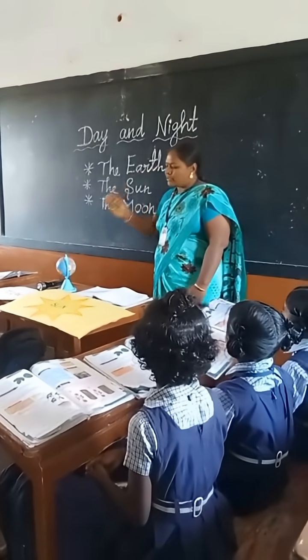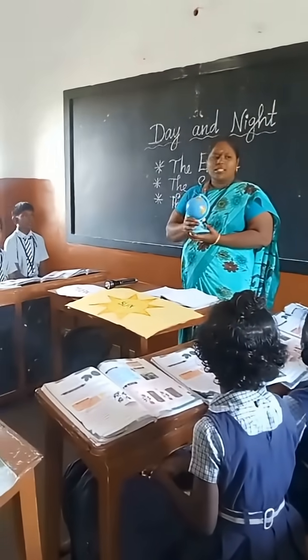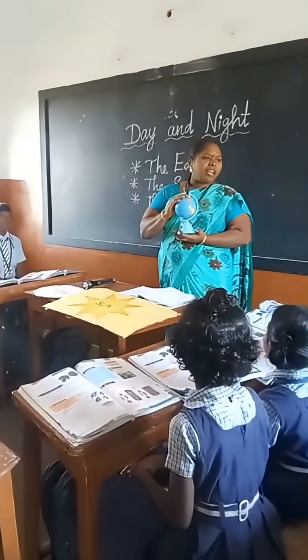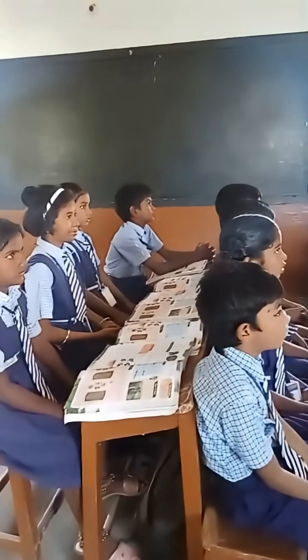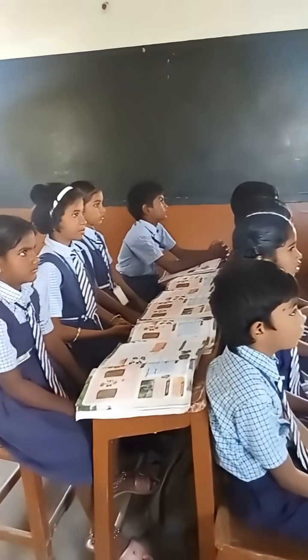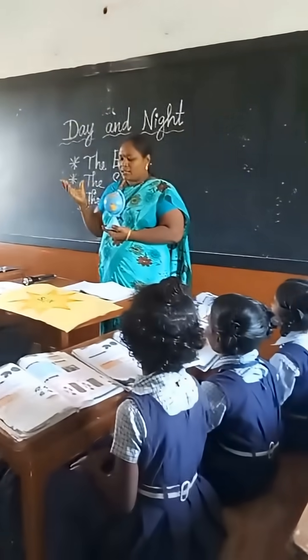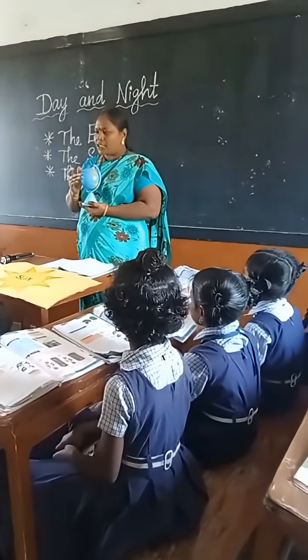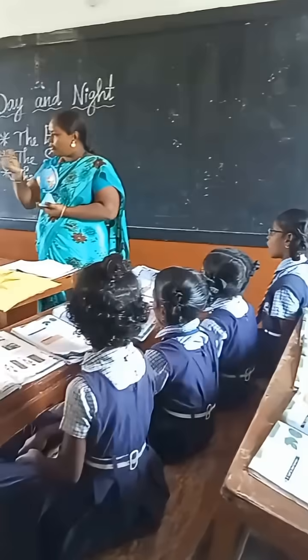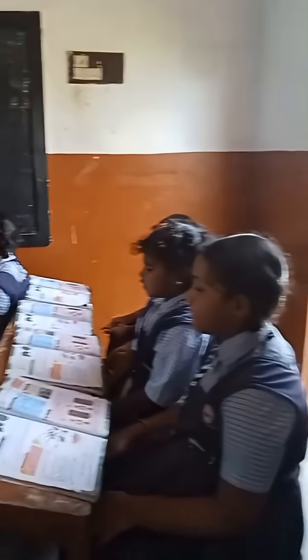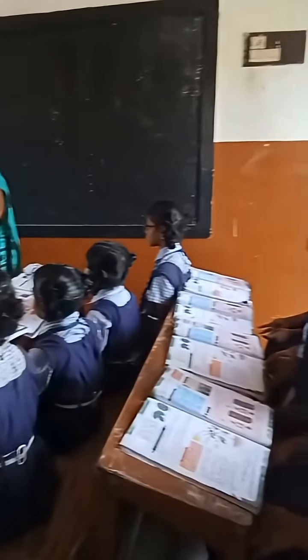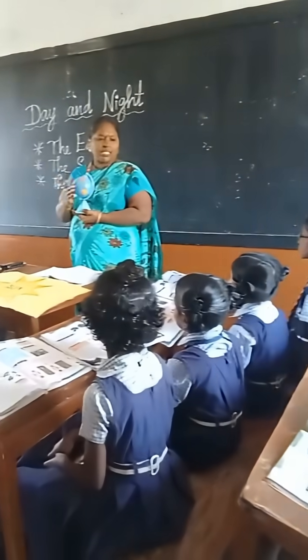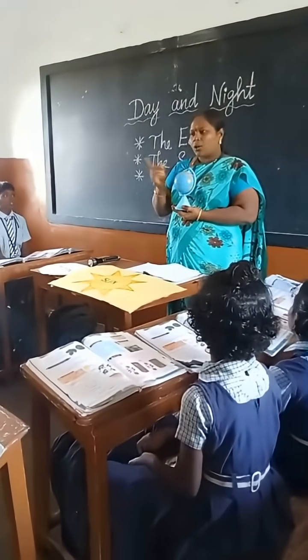The earth. Children, this is our earth. The earth is round like a ball. It spins or turns all the time. This turning movement is called rotation.